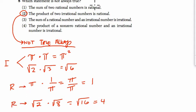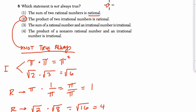What about the other ones? The sum of two rational numbers is rational. Well, a rational number is when you have a number written as the ratio of two integers, a and b.